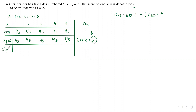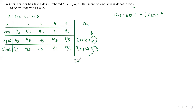We can compute x squared times its probability. 1 squared is 1 times 1/5 = 1/5; 2 squared is 4 times 1/5 = 4/5; then 9/5; 16/5; and 25/5. When we add all these, the sum of x² P(x) is 11, and this is the expected value of x squared. The variance is E(x²) minus [E(x)]² = 11 minus 9 = 2.